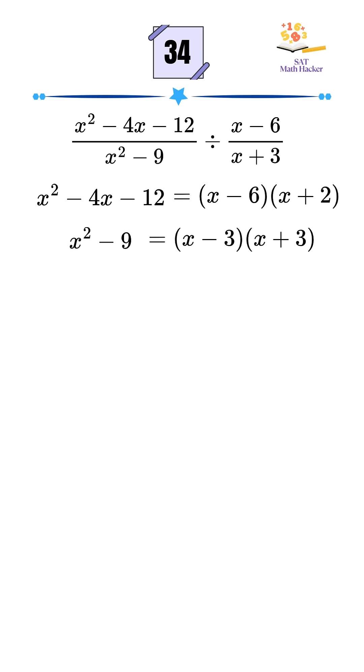So now the expression becomes x minus 6 times x plus 2 over x minus 3 times x plus 3, divided by x minus 6 over x plus 3.